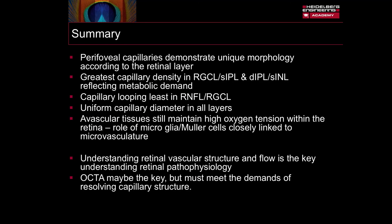In summary, perifoveal capillaries demonstrate unique morphology according to the retinal layer. The greatest capillary density is in the retinal ganglion cell layer, superficial inner plexiform layer, and in the deep inner plexiform and superficial inner nuclear layers, reflecting the metabolic demand of these tissues. Capillary looping is seen least in the retinal nerve fibre layer and the retinal ganglion cell layer. All capillaries within the retina have a uniform capillary diameter. The avascular tissues still maintain high oxygen tension within the retina, and the role of the microglia and Müller cells is closely linked to microvascular structure and flow. Understanding retinal vascular structure and flow is the key to understanding retinal pathophysiology. OCTA may be the key, but it must meet the demands of resolving this fine microvascular structure.